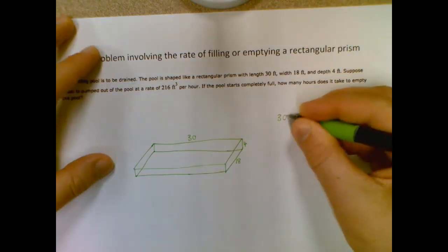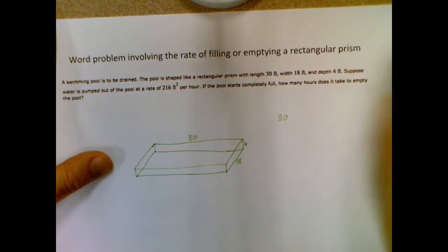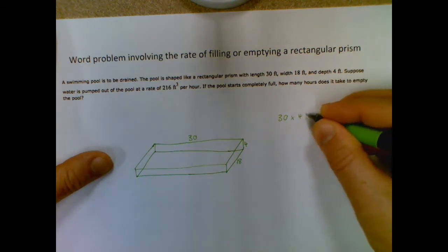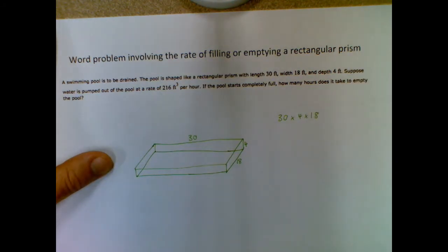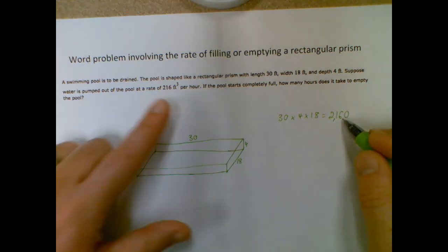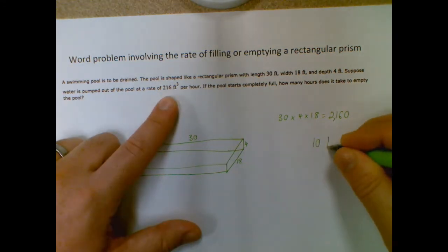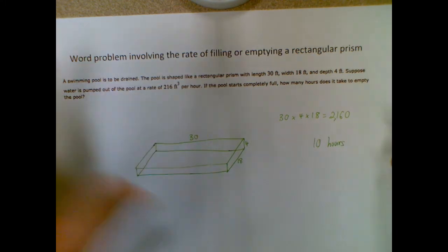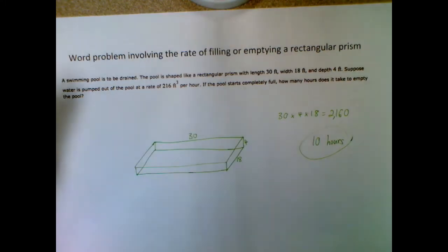So volume, 30 times 4 times 18, so 2,160. So just divide that by your 216 and you'll find out it takes 10 hours. Cool.